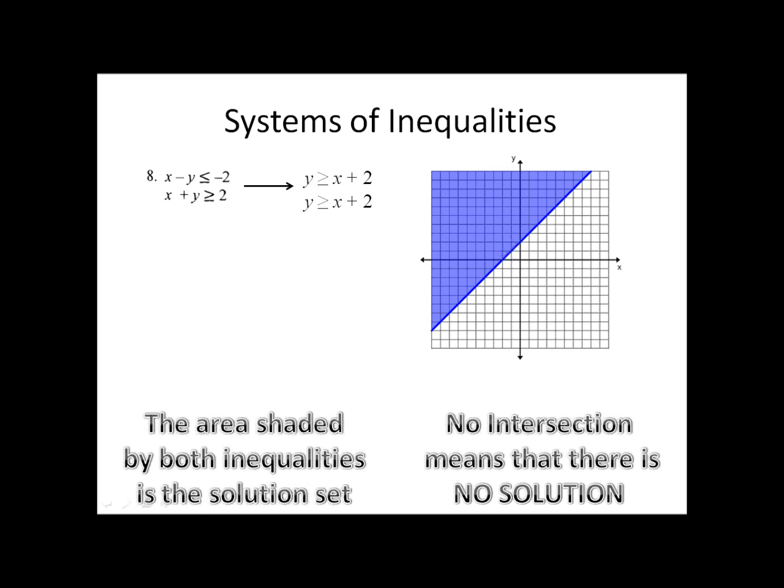I subtracted x from both sides on the first one, divided by negative 1, and remember when you divide, the inequality symbol flips. I did the same kind of thing to the second one, and I ended up, once again, with y is greater than or equal to x plus 2. Both of them are the same inequality. So I graphed the blue one, and then I graphed the second one, which is the red one.